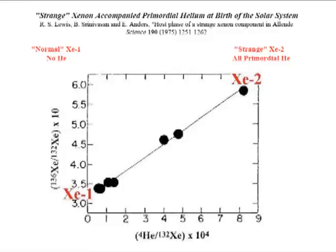Measurements at the University of Chicago showed that all primordial helium was accompanied by strange xenon, as shown here from mineral separates of the Allende meteorite.